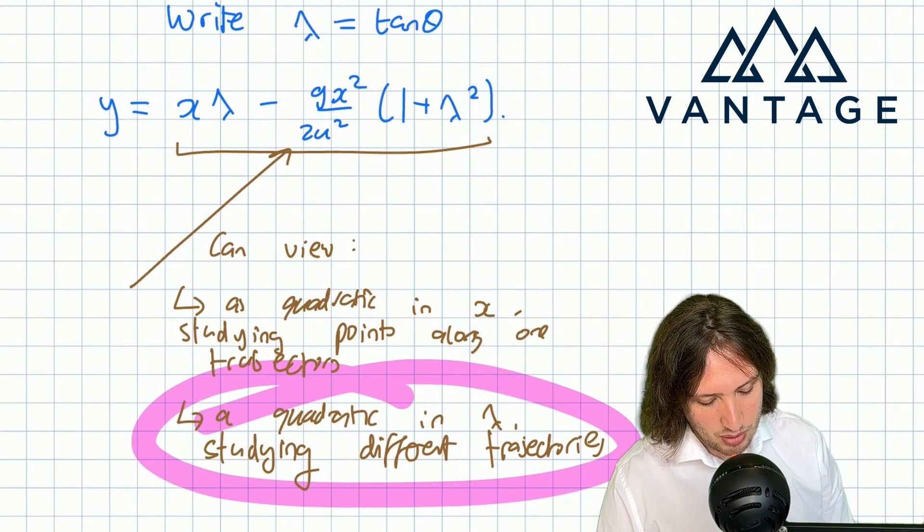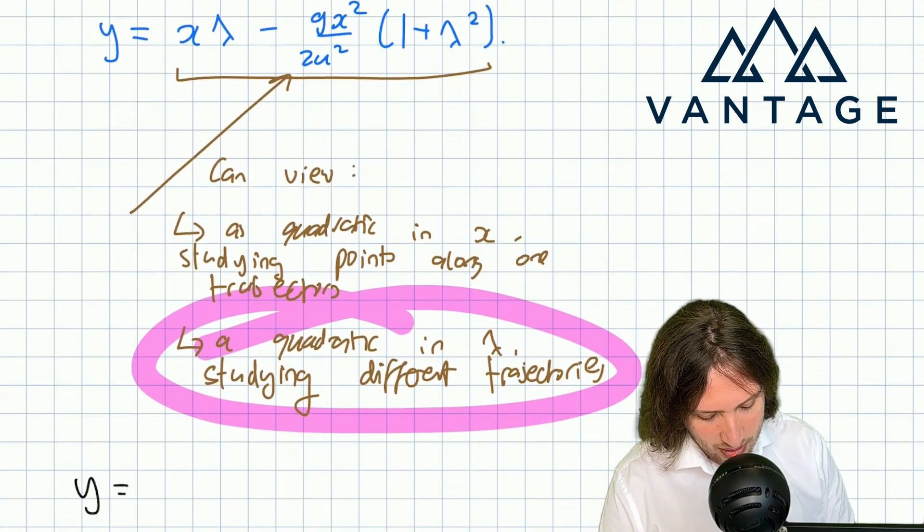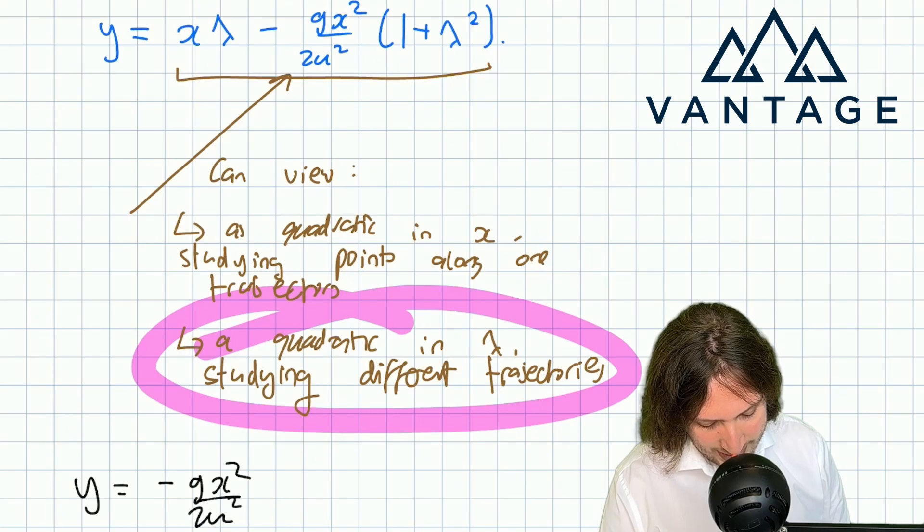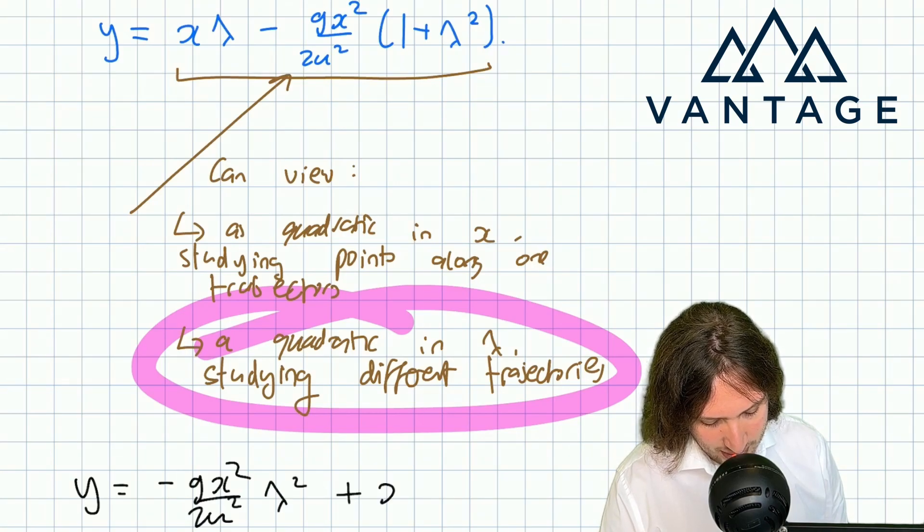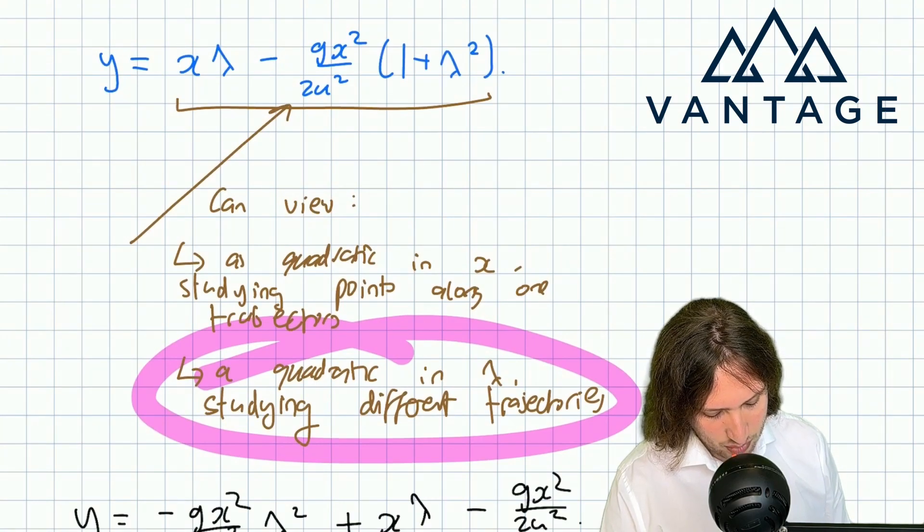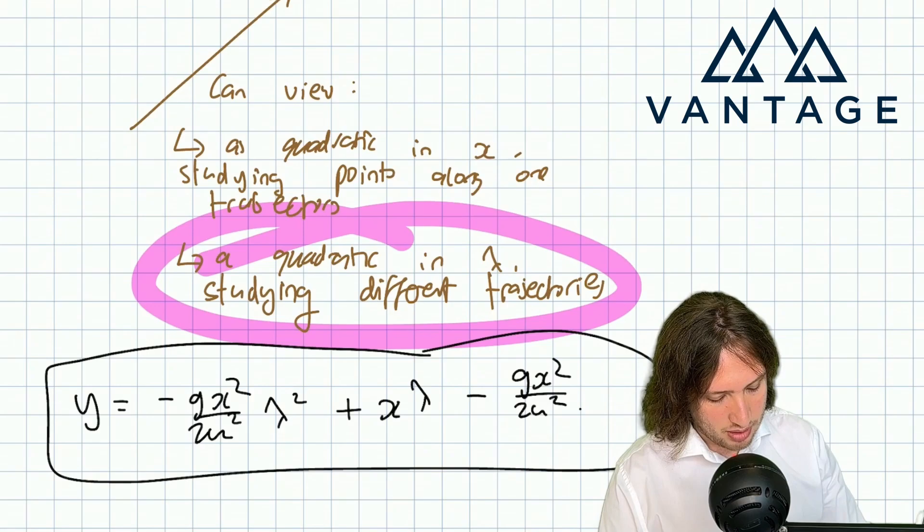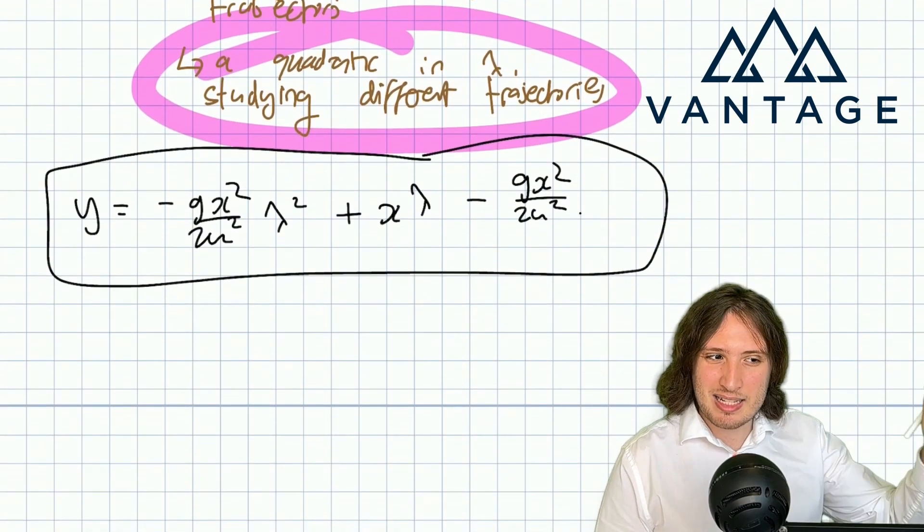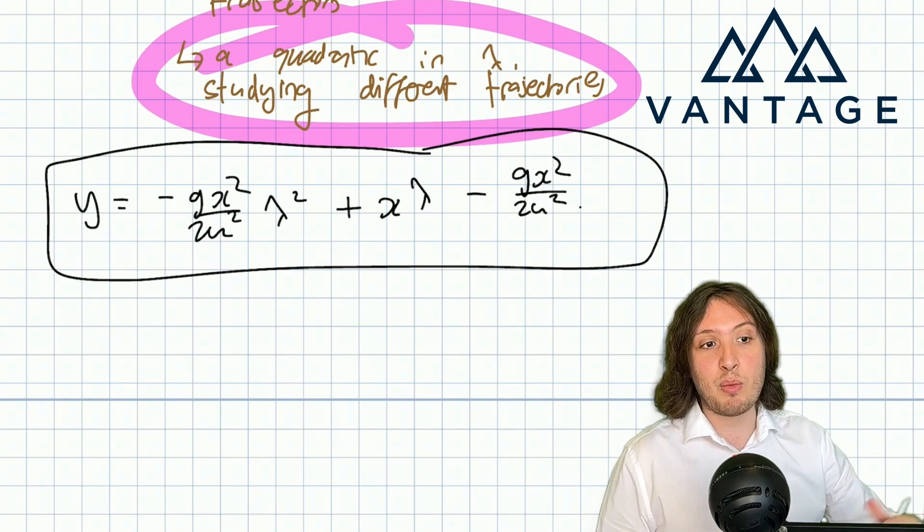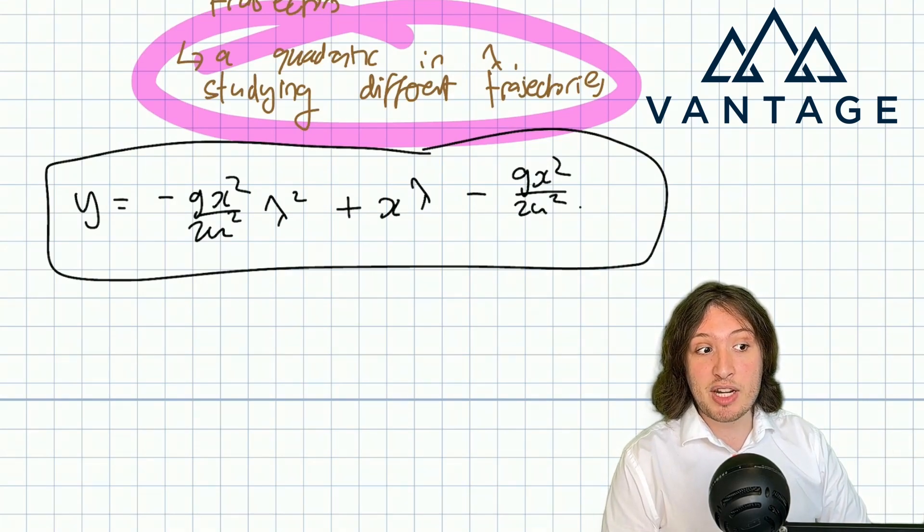Let's write this as a quadratic in λ. I've got y equals minus gx² by 2u² λ² plus x λ minus gx² by 2u².